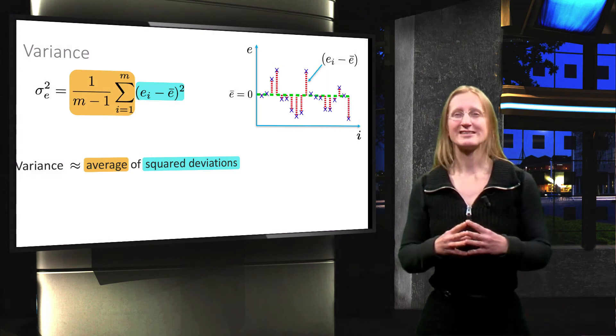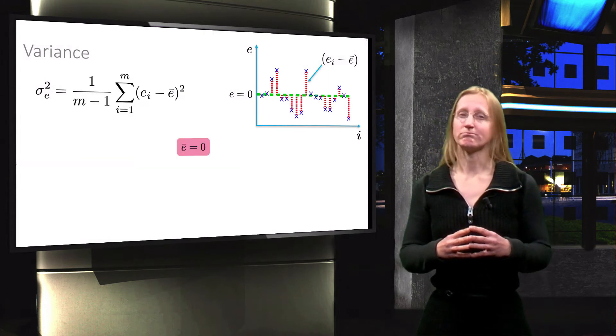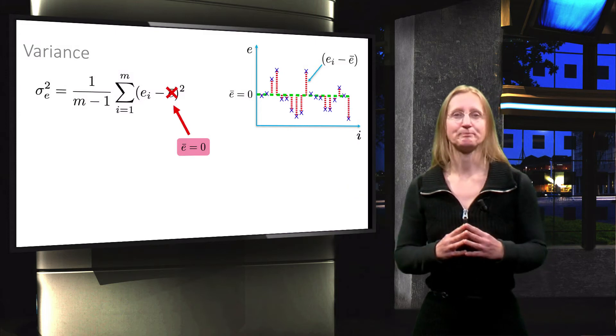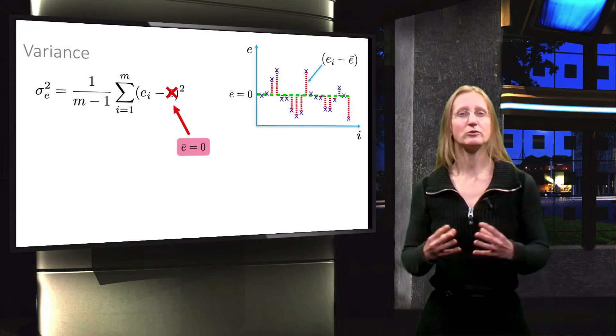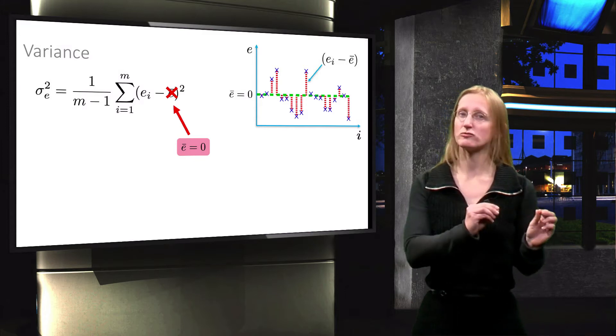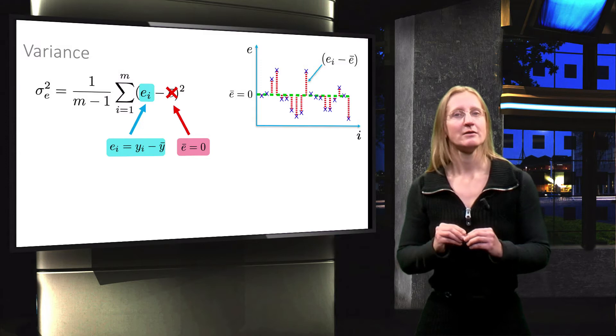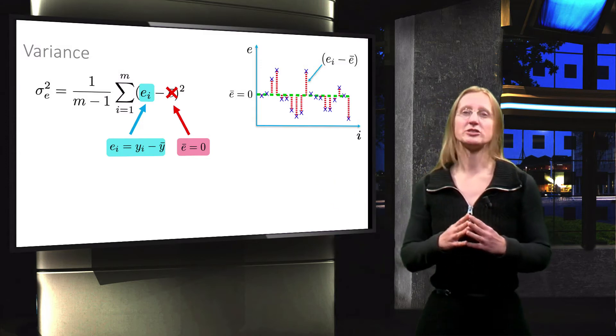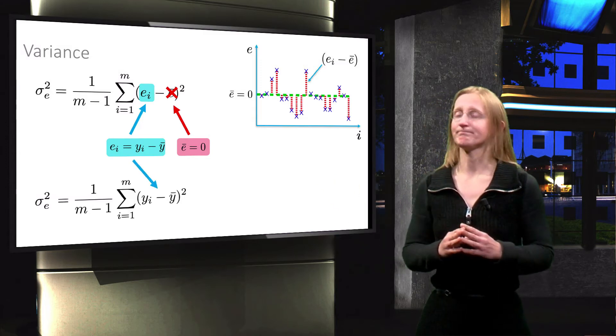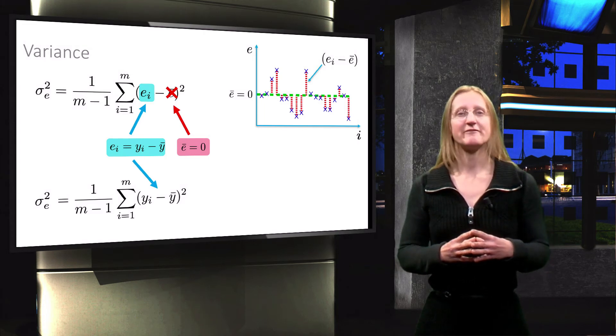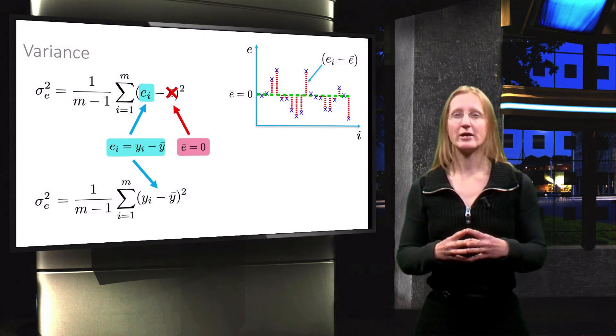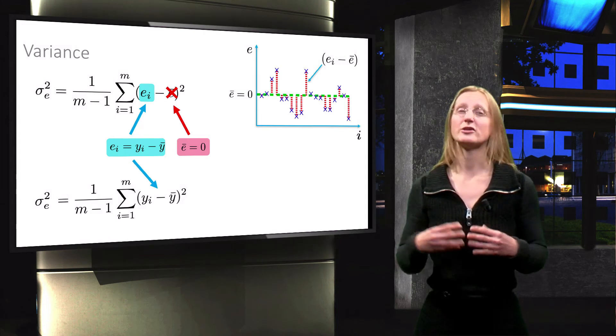Now remember that the mean error will be zero and it cancels out. Furthermore, the individual errors are equal to the distance from individual observations to their mean. Now by plugging in this equation we get this result. We can now see that in fact the variance of the random errors is equal to that of the observations.